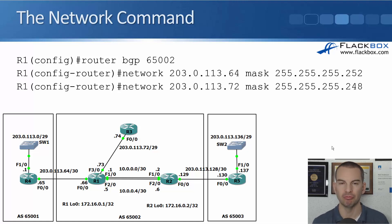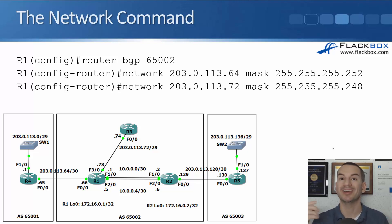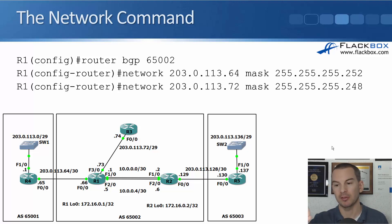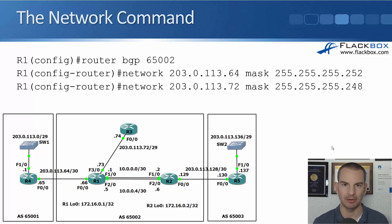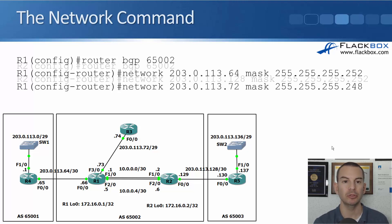Notice the mask keyword in the middle of the command — it's really easy to forget. When we configure static routes it looks similar: IP route, then the prefix, then the mask, then the destination, but we don't say 'mask' in the middle. The command will fail in BGP if you forget to say mask. So if you put a network statement in and get an error message, most likely it's because you forgot to say mask.